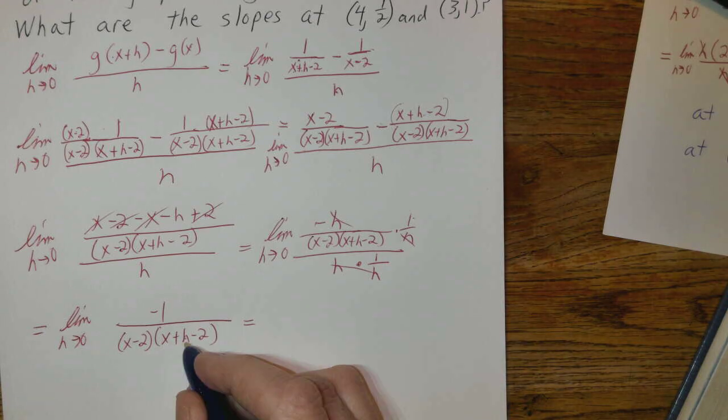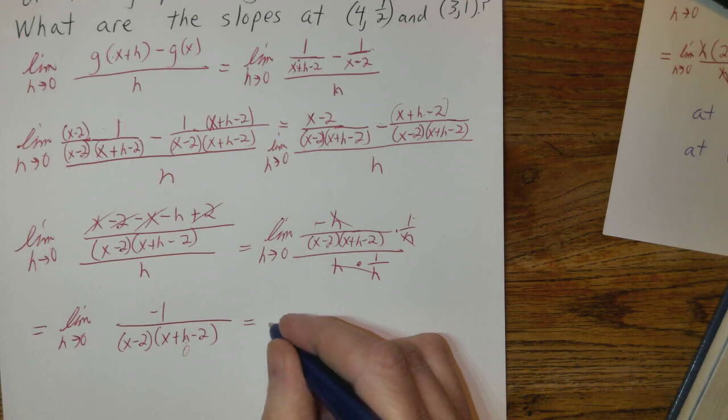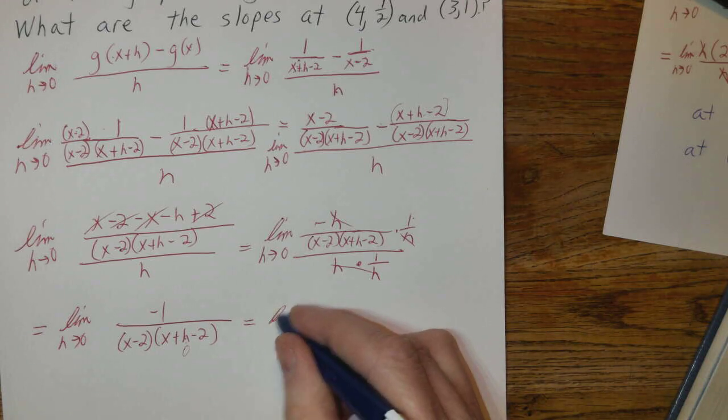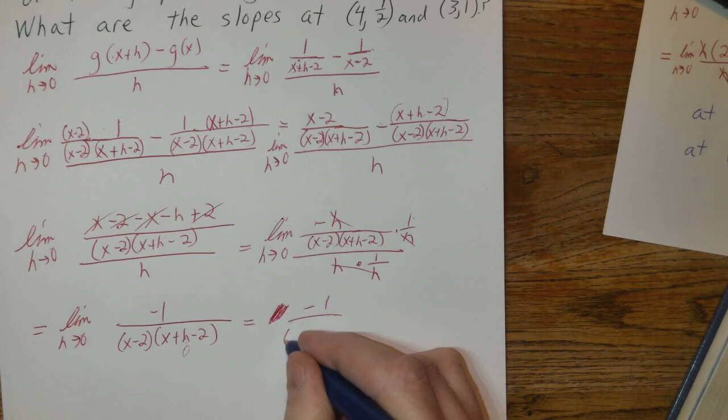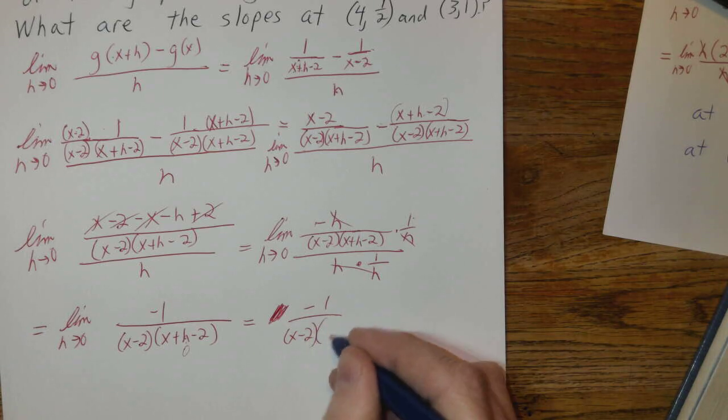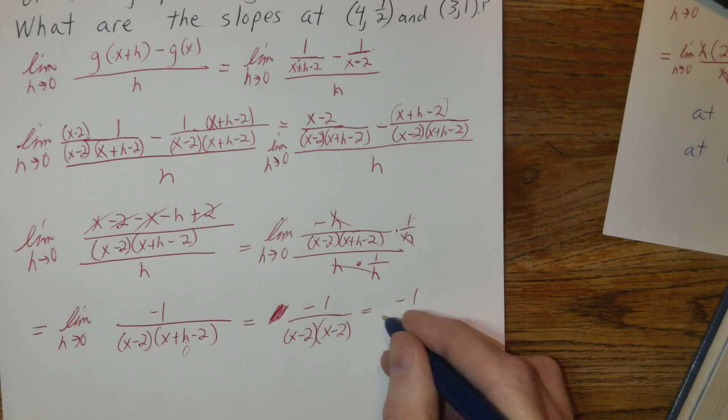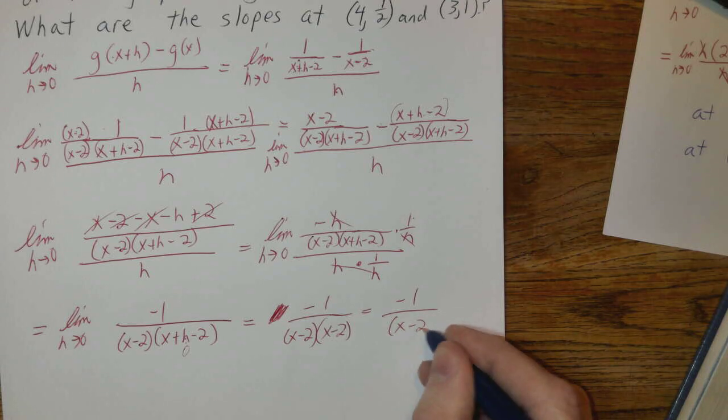I'm going to put 0 in there. When I substitute 0, the limit's done. I've got -1 over (x-2)(x-2), or -1/(x-2)².